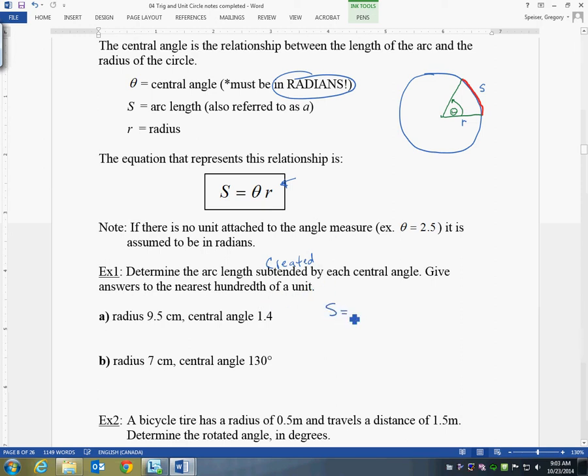Okay, so if I write S is equal to theta R, the radius is 9.5, and the central angle is 1.4. So I just write 1.4 times 9.5. It might feel kind of strange that it just says 1.4. It doesn't say degrees here, so this means radians. Okay, so again, if it doesn't have units written, that means it's in radians.